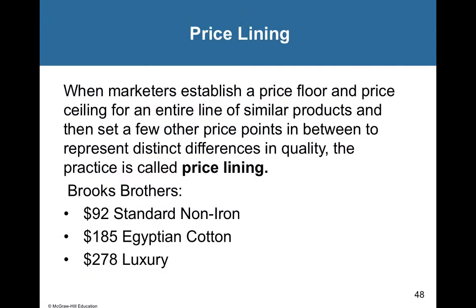Another consumer pricing tactic is price lining, common in the clothing industry. Using Brooks Brothers as an example — a marketer establishes a price floor, the lowest price, and a price ceiling, the highest price, for an entire line of similar products, to target different consumers in different market segments. Brooks Brothers offers a standard non-iron dress shirt at $92 (the price floor), an Egyptian cotton shirt at $185, and a luxury dress shirt at $278 (the price ceiling).